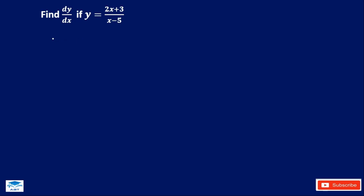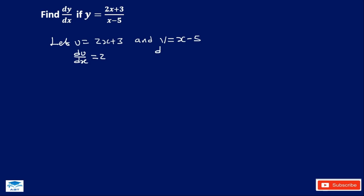You first let u be equal to the numerator and v be equal to the denominator. Then you differentiate u with respect to x — when you differentiate 2x you get 2, and when you differentiate a constant it is 0, giving us du/dx = 2. You also differentiate v with respect to x — when you differentiate x you get 1 and the differential of any constant is 0. Then you quote the quotient rule.